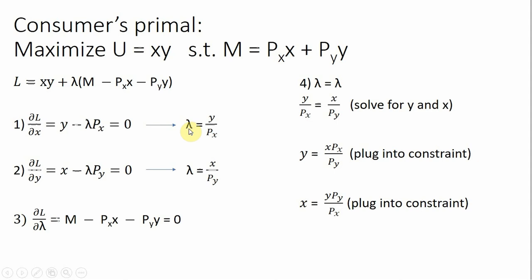Solving the first partial derivative expression for lambda, we get one result; solving the second expression for lambda gives another. In step four, we set lambda equal to lambda. We then solve this combined expression for Y and for X separately. Those results will each be plugged into the budget constraint.